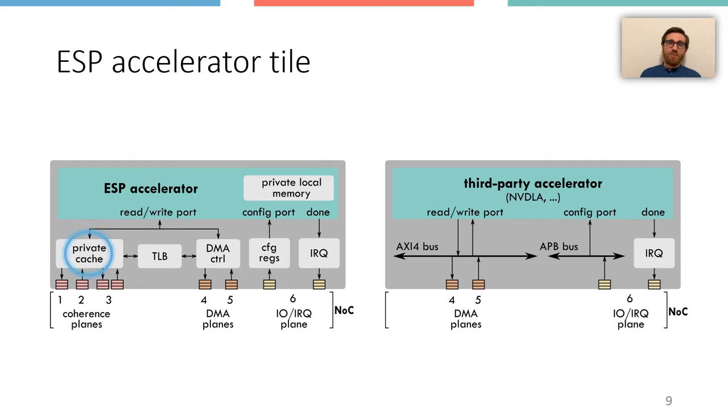Moreover, the socket also has support for things like multiple cache coherence models, accelerator-to-accelerator communication, dynamic voltage frequency scaling and performance monitors. By placing all these services in the automatically generated socket, ESP highly simplifies the accelerator design.